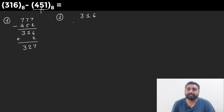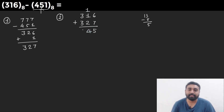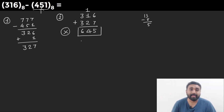In the second step, we add 316 and the 8's complement of 451, which is 327. So: 6 plus 7 = 13, subtract 8 gives 5 with carry 1. 1 plus 2 plus 1 (carry) = 4. 3 plus 3 = 6. Here we are not getting any carry, which means the answer is negative.